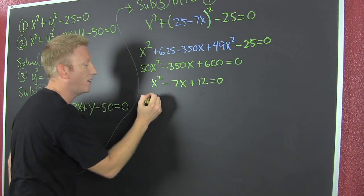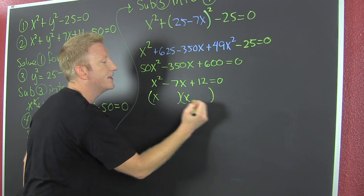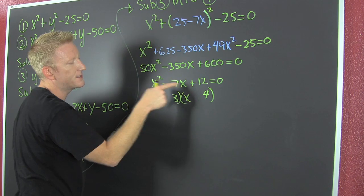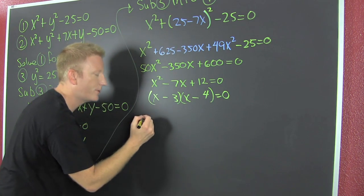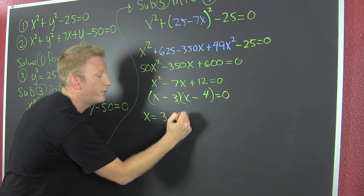Because now with this cute problem we have the factors of 12 that add to be 7. That's 4 and 3. x and x, the signs are the same and they're both negative, (x-4)(x-3) equals 0. So my potential x's are gonna be 3 and 4, and we're gonna explore both of those separately.